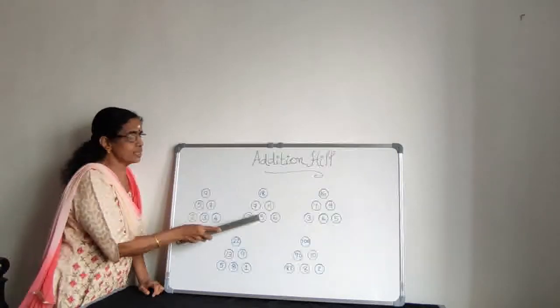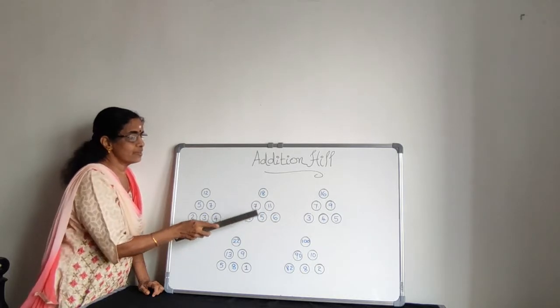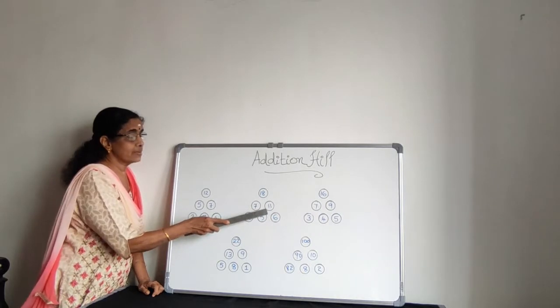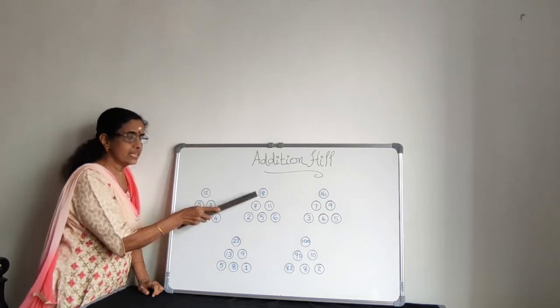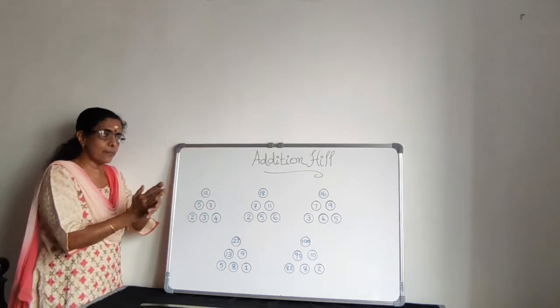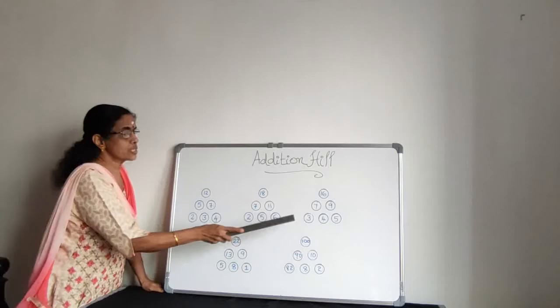2 plus 5 makes 7. 5 plus 6 makes 11. 7 plus 11, we are getting 18. If your answer is right, clap yourself.